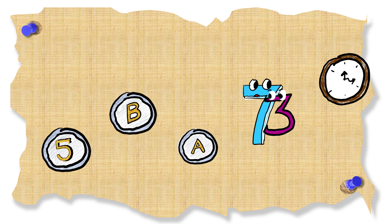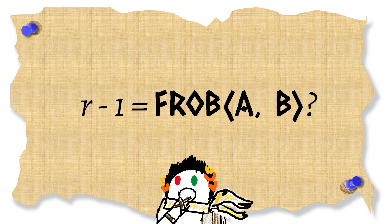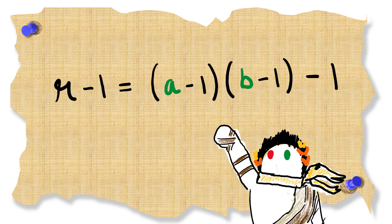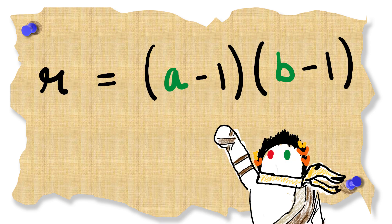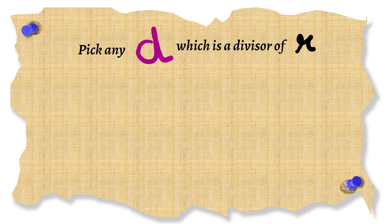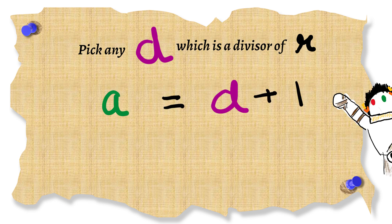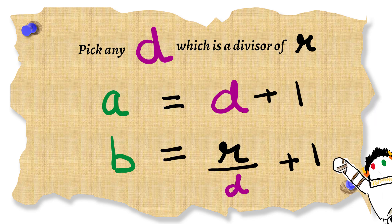If you trace your step backwards then you would realize that this is just like asking the question when is r minus 1 the Frobenius number of a and b. And these are just the solutions to the equation r equals a minus 1 times b minus 1. We simply pick one divisor of r and then add 1 to it to get a and similarly we get b.